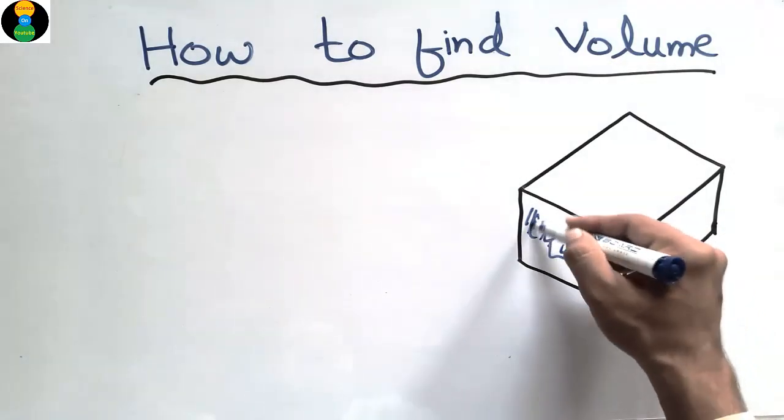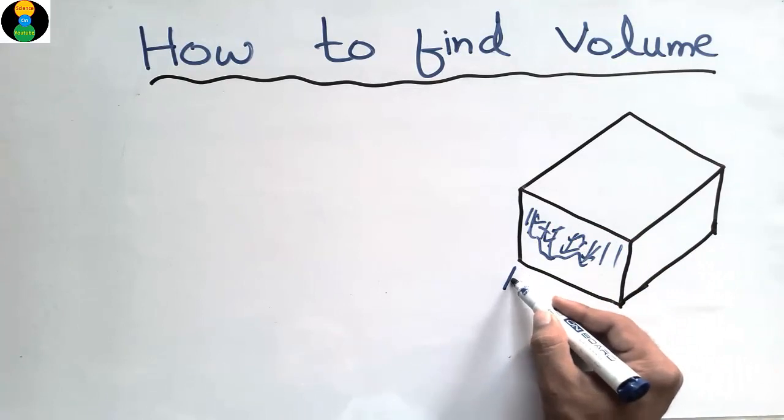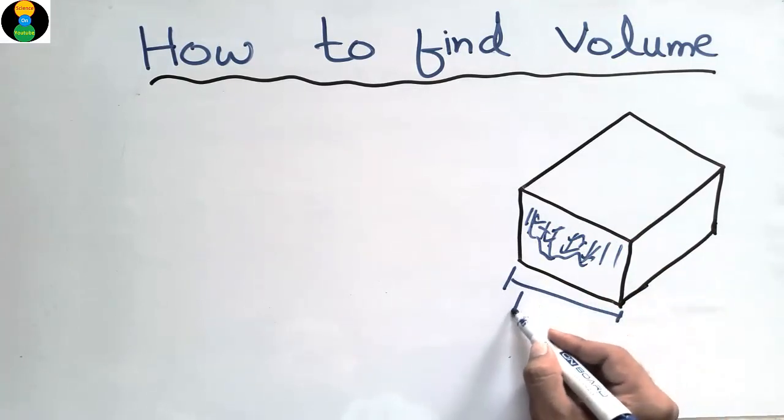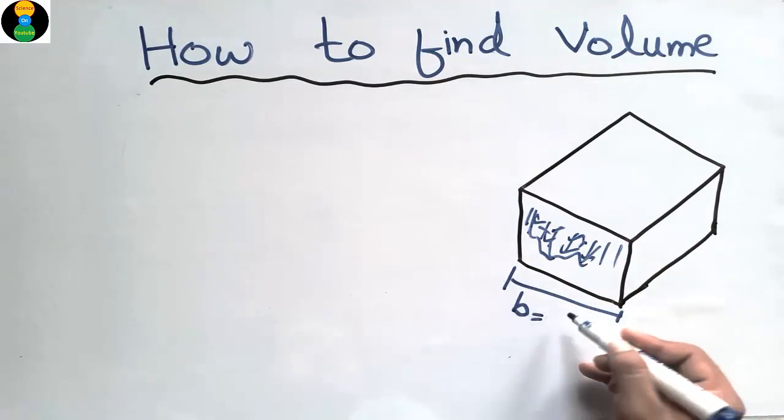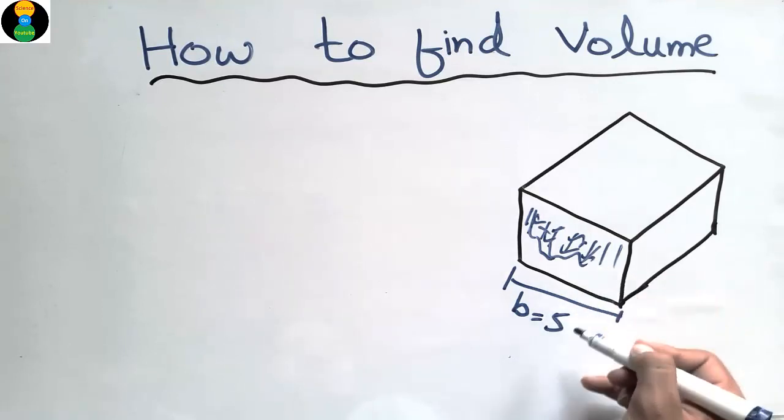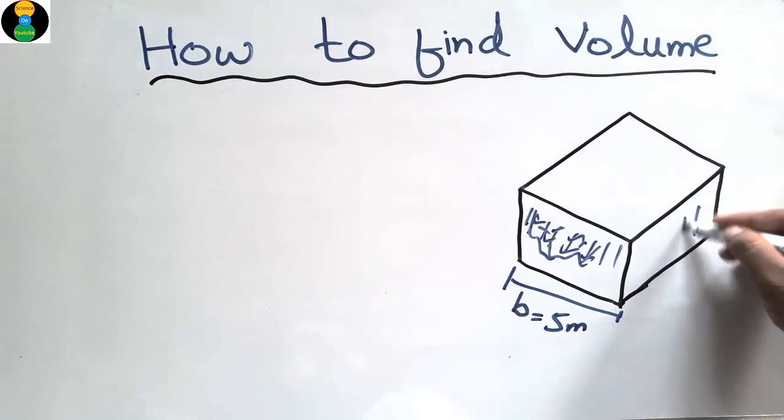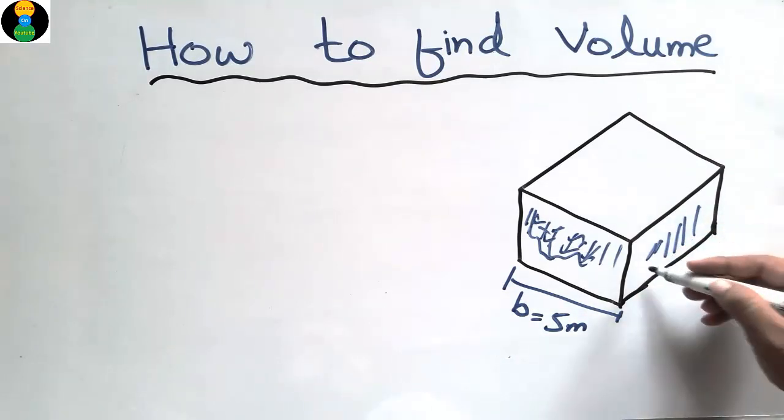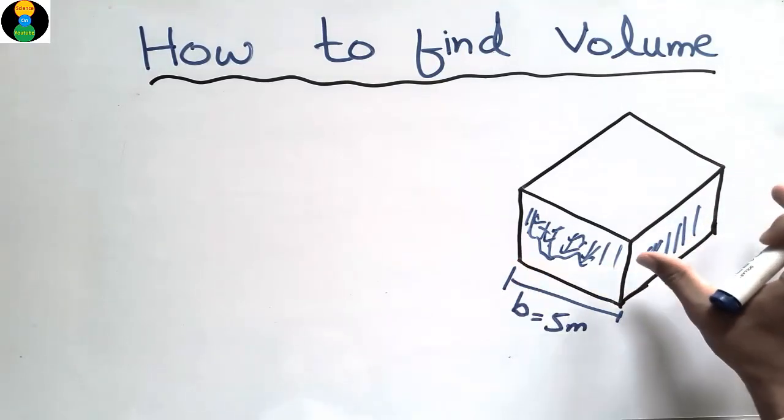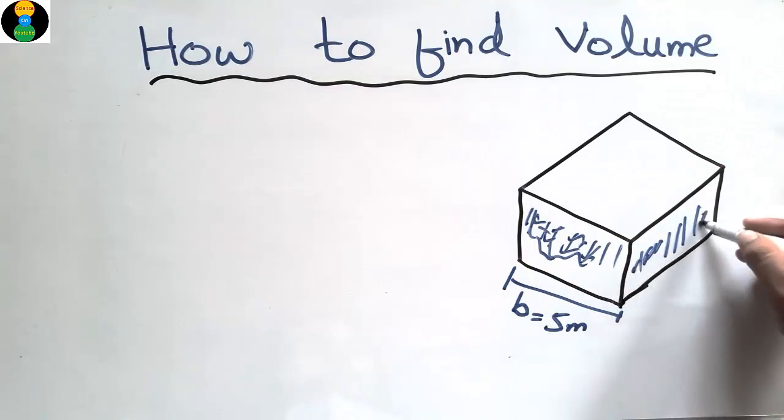This is one side of the object. Consider this is the width of the object, represented by B. It may be of any dimension, for example it is 5 meters. This is another dimension, widthwise, this is the lengthwise, and this dimension is also given to us. This length is suppose it's 8 meters.